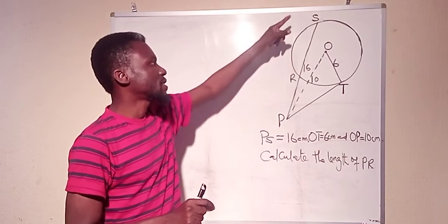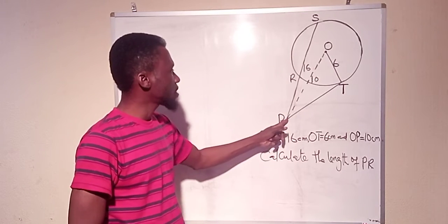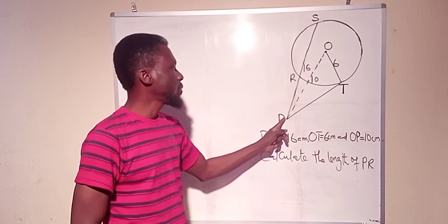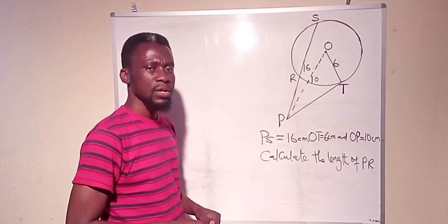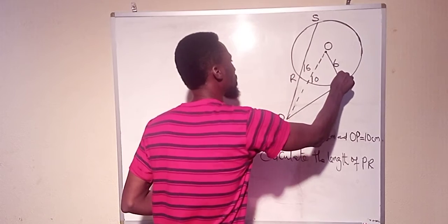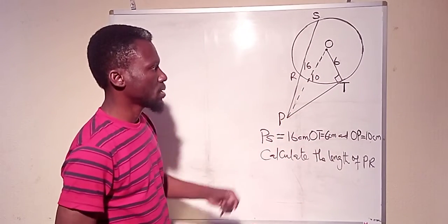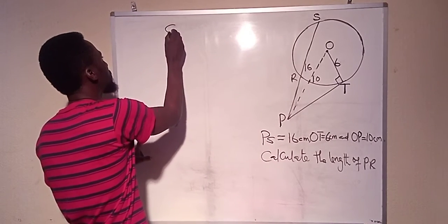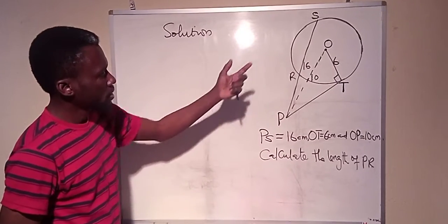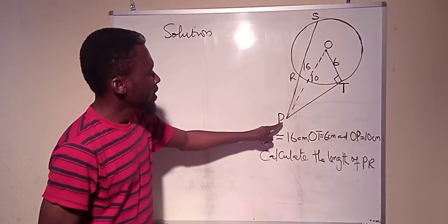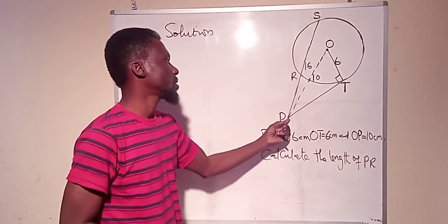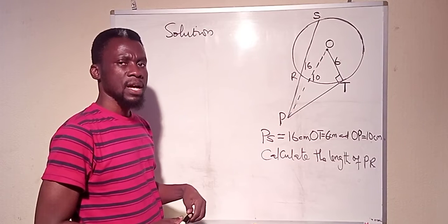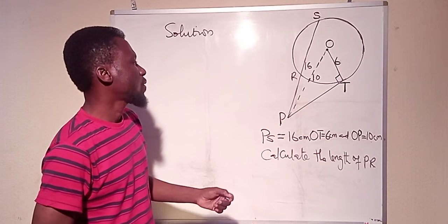So PS is the secant, PR is the outside part of the secant, and PT is the tangent. Whenever a tangent and a radius meet, they form an angle of 90 degrees. So we need to first find the tangent PT so that we can apply the tangent-secant theorem to find PR.